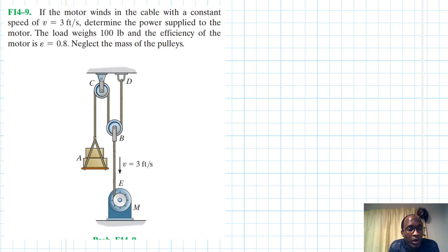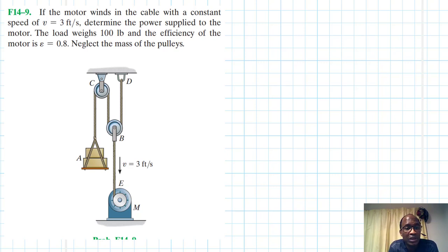Hello, I welcome you all. The problem reads: if the motor winds in the cable with a constant speed of 3 feet per second, determine the power supplied to the motor. The load weighs 100 pounds and the efficiency of the motor is 0.8.